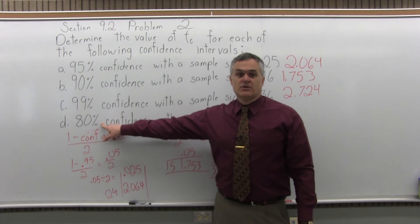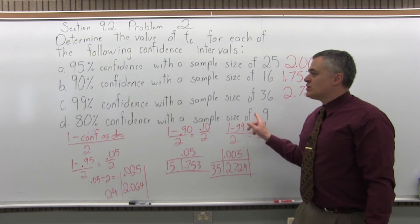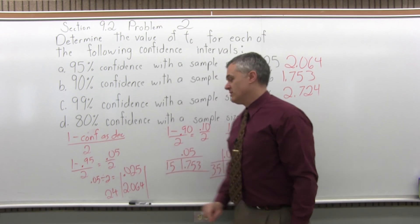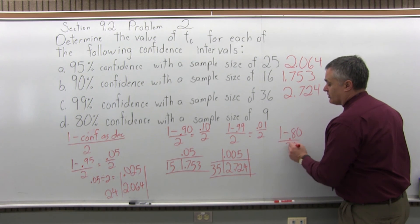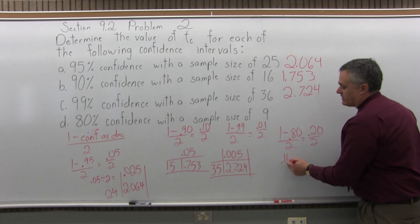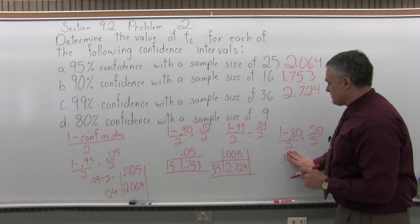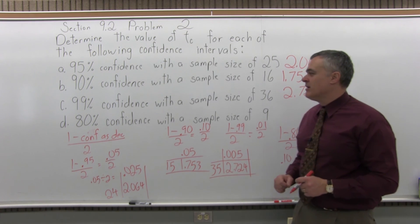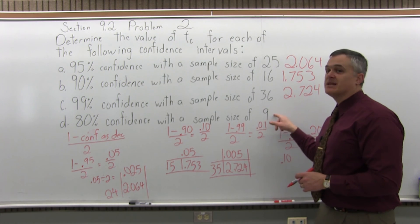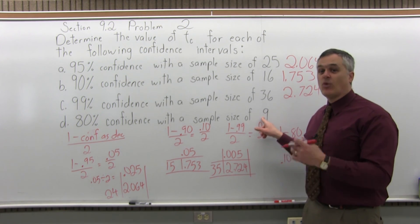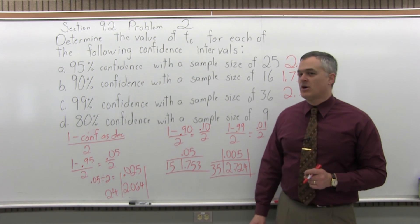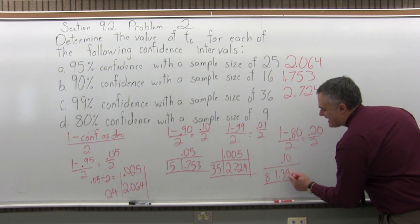Finally, part D: an 80% confidence interval with a sample size of 9. The level of confidence determines the column. We do 1 minus 0.80 over 2. 1 minus 0.80 is 0.20, and 0.20 divided by 2 is 0.10. Think of it as money — 10 cents. So 0.10 is the correct column. For the row: a sample size of 9 gives us 8 degrees of freedom — one less than the sample size. Where the 0.10 column intersects with the 8 degrees of freedom row gives 1.397.